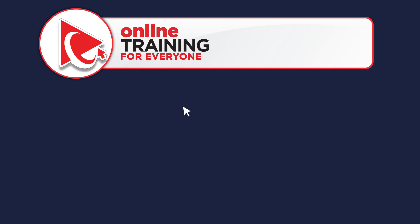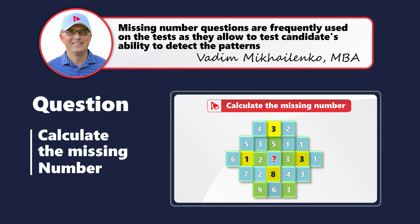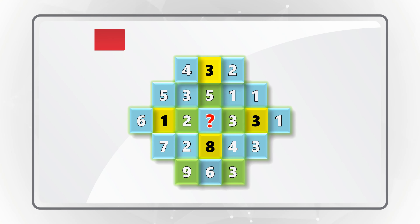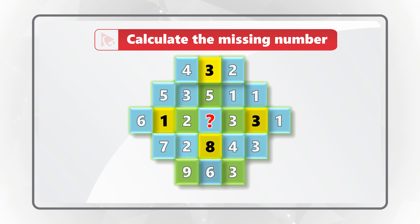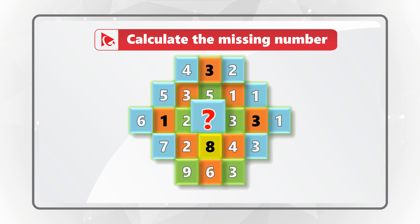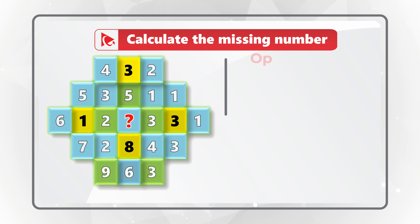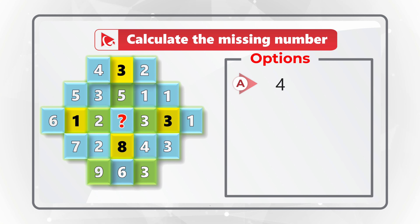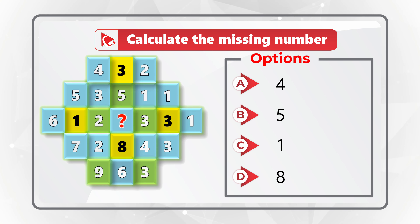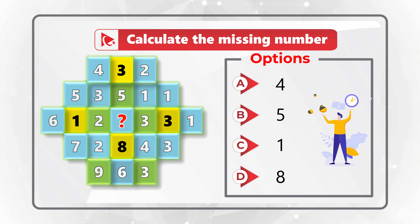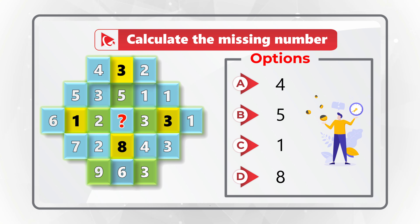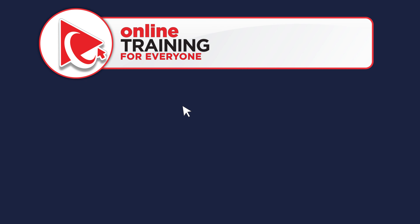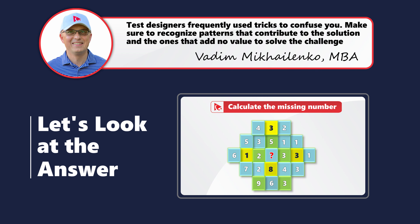Here's the analytical skills and pattern recognition question which might trick you. You're presented with a very unusual-looking shape that has multiple boxes and numbers inside. You need to calculate the missing number, represented by a question mark in the middle of the box. You have four different choices. Give yourself maybe 20 to 30 seconds — pause the video to see if you can get to the correct answer.